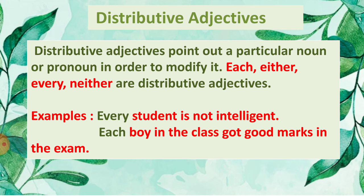The next type is distributive adjectives. Distributive adjectives point out a particular noun or pronoun in order to modify it. Each, either, every, and neither are distributive adjectives. For example, 'Every student is not intelligent' and 'Each boy in the class got good marks in the exam.' Here 'every' and 'each' are followed by nouns — 'student' and 'boy' respectively.